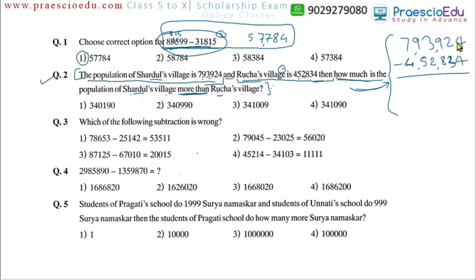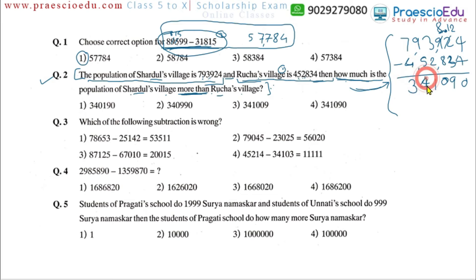Now 4 minus 4 is 0. Then 2 minus 3 is not possible, so we borrow: 12 minus 3 is 9. We borrowed 1 from 9, so 9 reduces to 8. Then 8 minus 8 is 0. Then 3 minus 2 is 1. Then 9 minus 5 is 4. And 7 minus 4 is 3. So the answer is 3,41,090, which is option number 4.